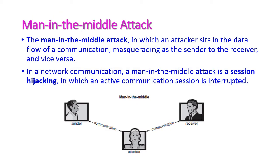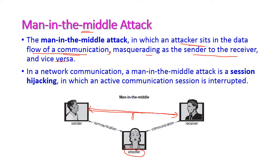Another attack is the man-in-the-middle attack, where the attacker sits in the data flow of communication, masquerading as both the sender to the receiver and vice versa. The sender and receiver are actually communicating, but the attacker sits in between the communication line and monitors communication from both sides. In network communication, this is called session hijacking, in which the active communication session is interrupted by the attacker sitting on the communication line.